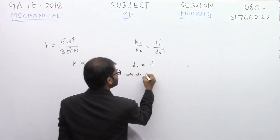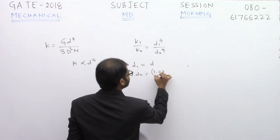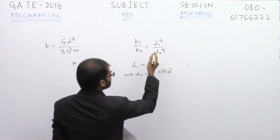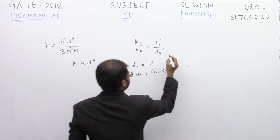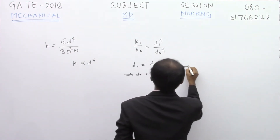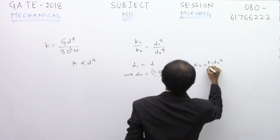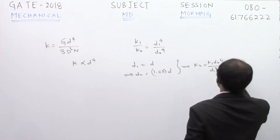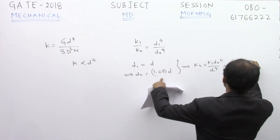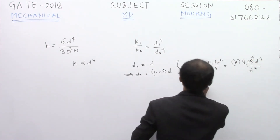We are given that d1 = d, and since the diameter is increased by 2 percent, d2 = 1.02 × d. Substituting into the ratio, we get k2 = k1 × (d2⁴ / d1⁴), which gives k2 = (1.02)⁴ × d⁴ / d⁴.